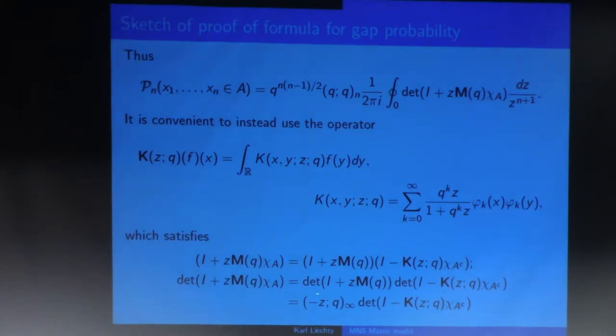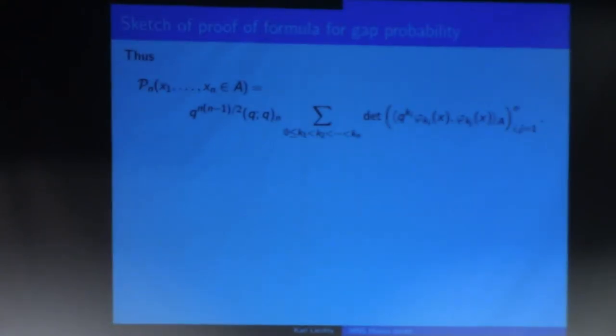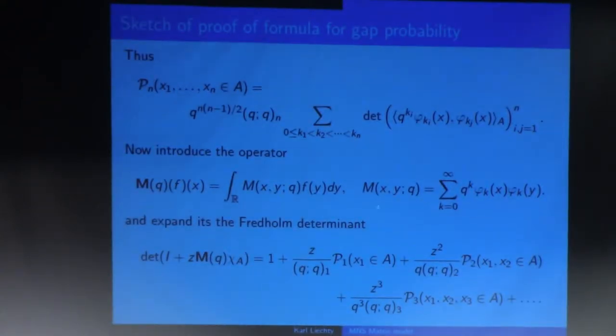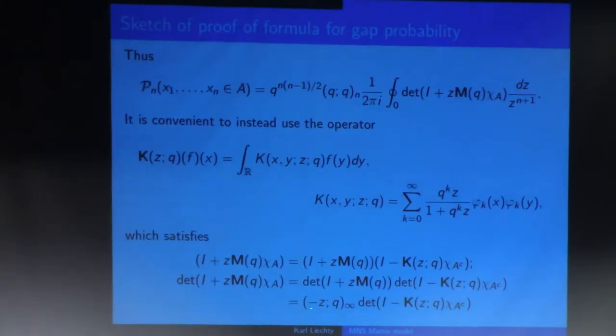Now, the determinant, which is I plus Z times M on the whole real line, is very simple to compute because I'll go back to M. So if I take I plus Z times M on the whole real line, it's diagonalized by these Hermite functions exactly, and that determinant is exactly a product of one plus Z times Q to the K, which is this Q-Pochhammer symbol. So this is what we do. We just take this determinant here, replace it with this one down here, and that turns out to give us a formula which is nicer for asymptotic analysis.